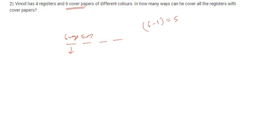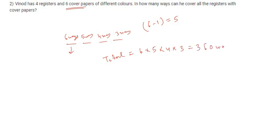In this way, he can cover the third register in four ways and the fourth register in three ways. So there are total 6 × 5 × 4 × 3 ways, that will be 360 ways to cover all the registers with cover papers. So the correct answer is 360.